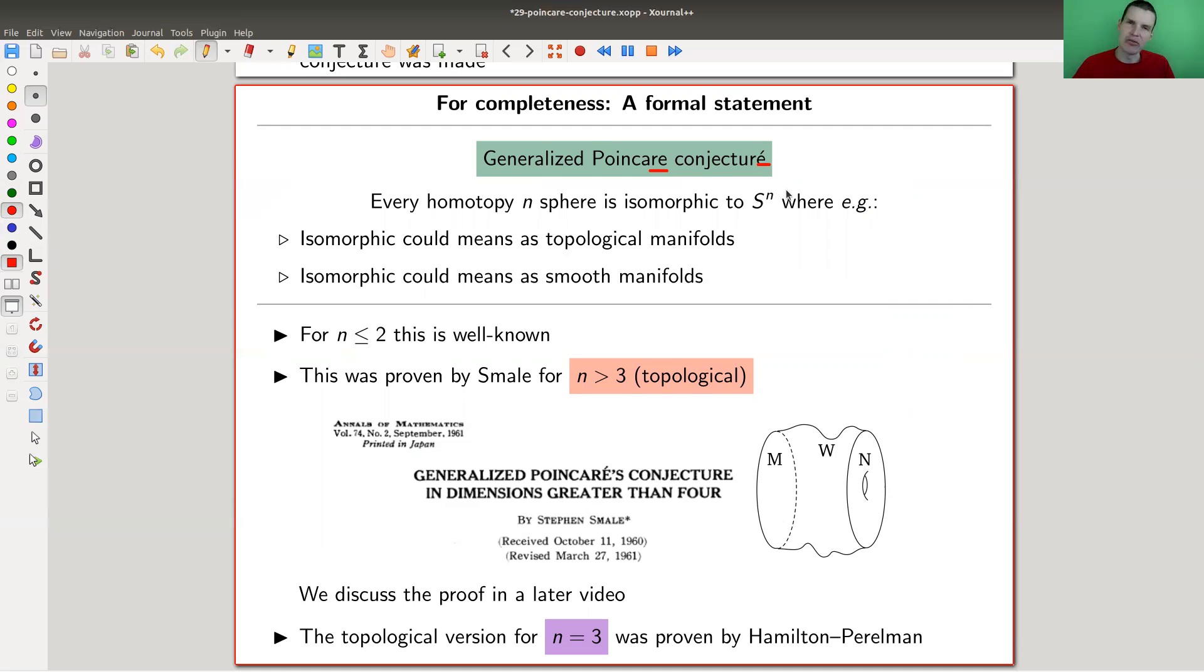Homotopy n-sphere is just a generalization of this idea of the fundamental group. There are kind of two flavors, or even a bit more. You can ask this as a topological object - just continuous - or as a smooth object, which is much stronger.